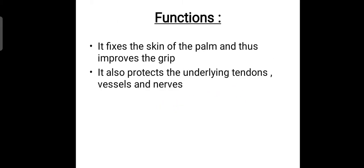The functions of the palmar aponeurosis are: it fixes the skin of the palm and thus improves the gripping capability of the hand, and it also protects the underlying tendons, vessels, and nerves. The palm is our primary defense mechanism — when falling, we stretch our hand to break the fall, and if someone is attacking, the palm is the first part of defense. Therefore, the palmar aponeurosis protects the important structures lying beneath it.